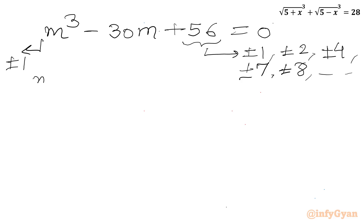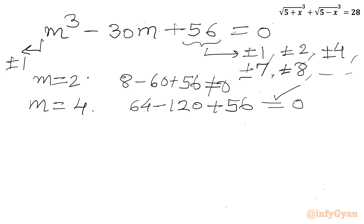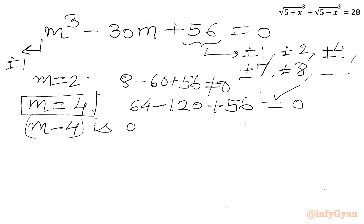If I plug in m equal to 2: 8 minus 60 plus 56 — that does not work. Let us try m equal to 4: 64 minus 120 plus 56. Yes, 64 plus 56 is 120, so m equal to 4 is a root, and m minus 4 is one factor of the cubic.